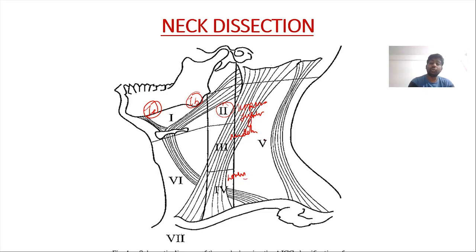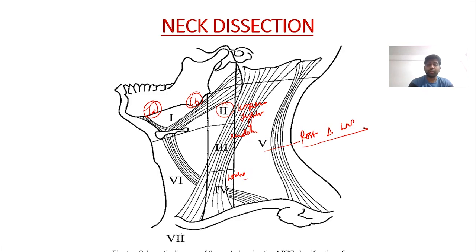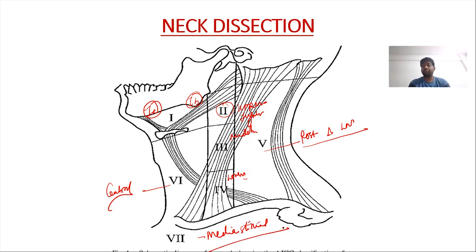Station 5 is the posterior triangle lymph nodes, divided into 5A (above the omohyoid) and 5B (below the omohyoid). Station 6 is the central group of lymph nodes and station 7 is the mediastinal group. For neck dissection purposes, we focus up to level 6. To recap: 1A submental, 1B submandibular, 2-3-4 upper/middle/lower jugular, 5 posterior triangle, 6 central.